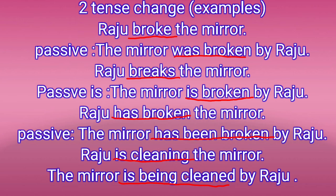Tense changes: look at the underlined verb. 'Broke' (V2) changes to 'was broken.' 'Breaks' (V5) changes to 'is broken.' 'Has broken' (has + V3) changes to 'has been broken.' For continuous tense (verb + V4), it changes to 'is being + V3' — for example, 'is cleaning' changes to 'is being cleaned.'